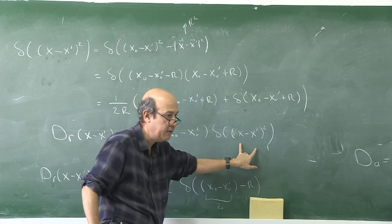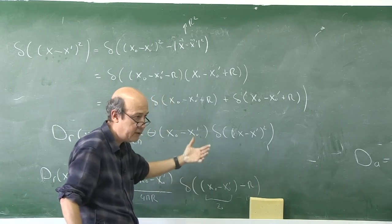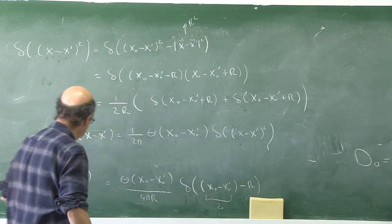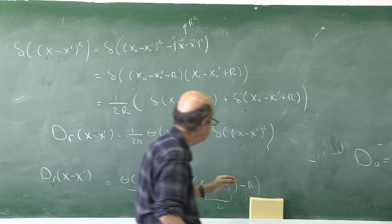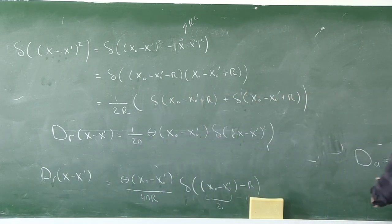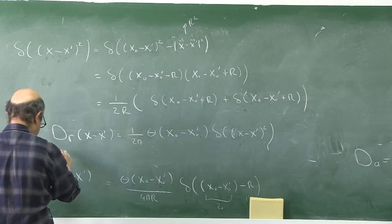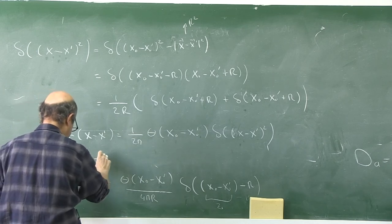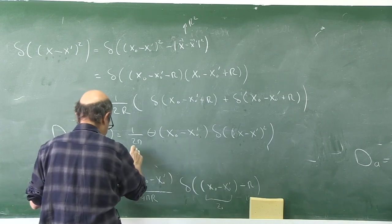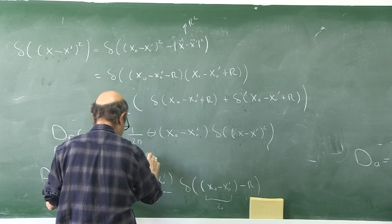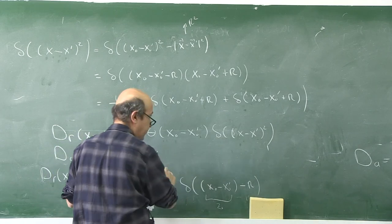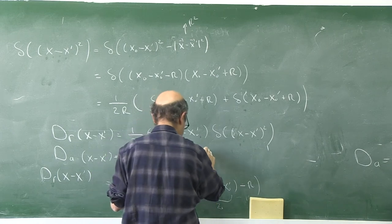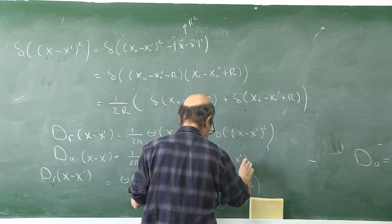The θ(x⁰ − x'⁰) factor is not Lorentz-invariant by itself, but it is always positive for the retarded case, so the contribution is invariant. Similarly, the advanced Green's function is: D_adv = (1/2π) θ(x'⁰ − x⁰) δ((x − x')²). These are the covariant forms of the retarded and advanced Green's functions.